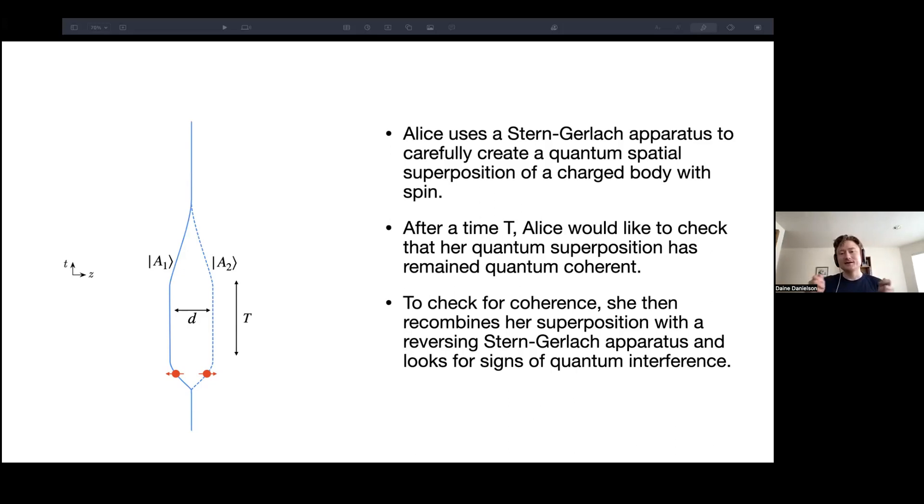So how can she do this? She can do this by recombining, very gradually recombining her superposition with a reversing Stern-Gerlach apparatus, and then looking for signs of quantum interference between the two branches of the wavefunction in the spin basis. So at this event here, I'm circling with my cursor, you can imagine Alice looks to see whether there's interference. For instance, if it's a superposition in the z direction of up and down, as indicated in the diagram, she could measure the spin about the x-axis, and if ever she measures the spin x to be down instead of up, she knows that she's decohered to some degree.